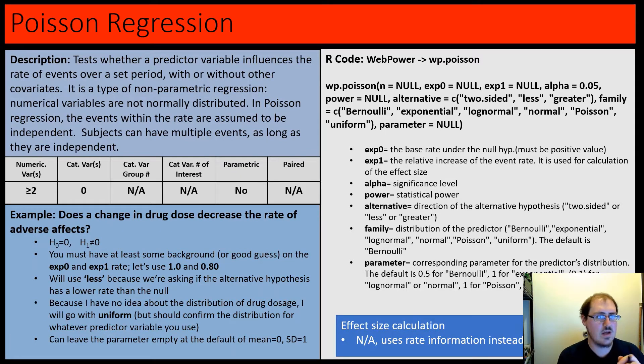There is another main type of regression called Poisson regression. Logistic had a response variable that was binary, like one or zero. Here, the response variable is going to be a rate of events over a set period. This is not normally distributed, and we're going to assume the events in the rates are independent. Subjects can have multiple events as long as they're independent. An example would be: does a change in drug dose decrease the rate of adverse effects? This is our y variable, this is our x variable.